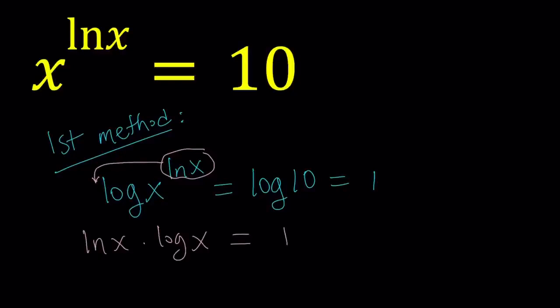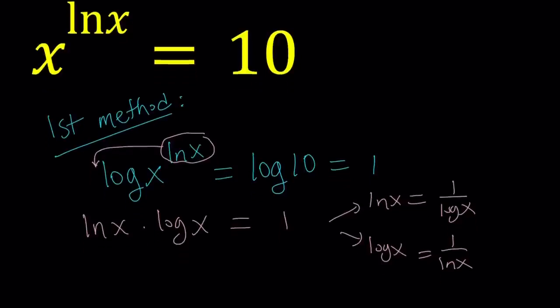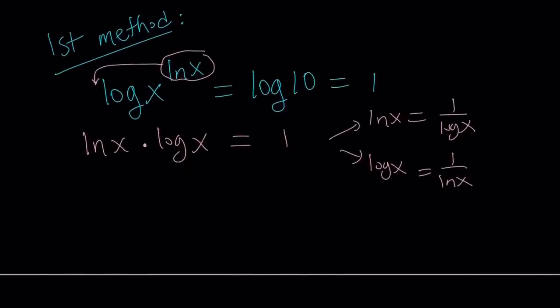I could isolate one of them and write ln x as 1 over log x, or write log x as 1 over ln x. But that doesn't really help, because these two logs have different bases. So what should we do? We can use the change of base formula, and it can be used in different ways. Whatever base you choose, you can go with that.